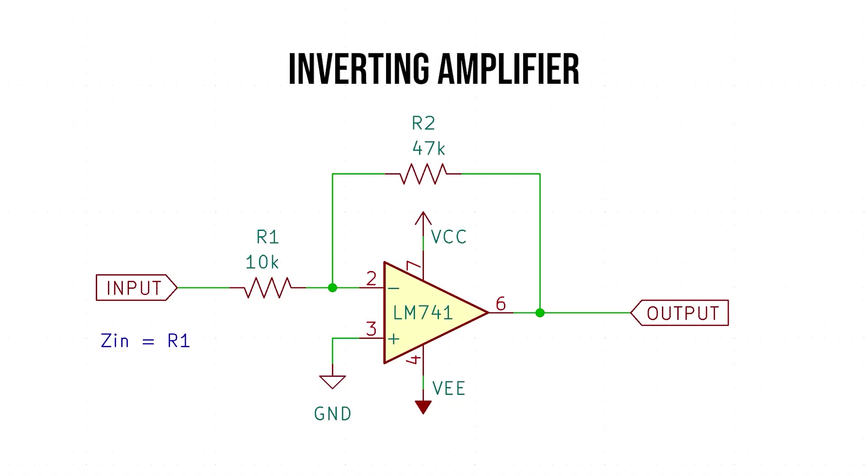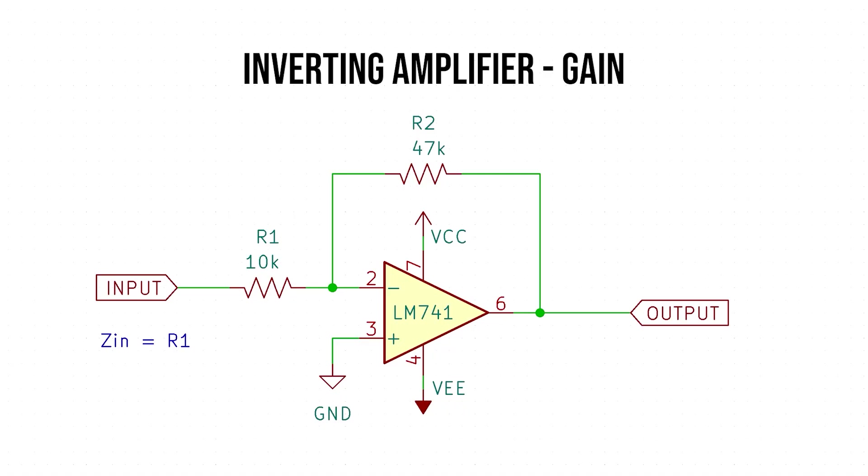The first circuit on our list is the inverting amplifier. In this amplifier, we have two resistors: a feedback resistor that forms our closed loop system feeding the output back to the non-inverting input, and an input resistance going to the inverting terminal. The gain of the system is negative RF over R1. Let's breadboard that circuit.